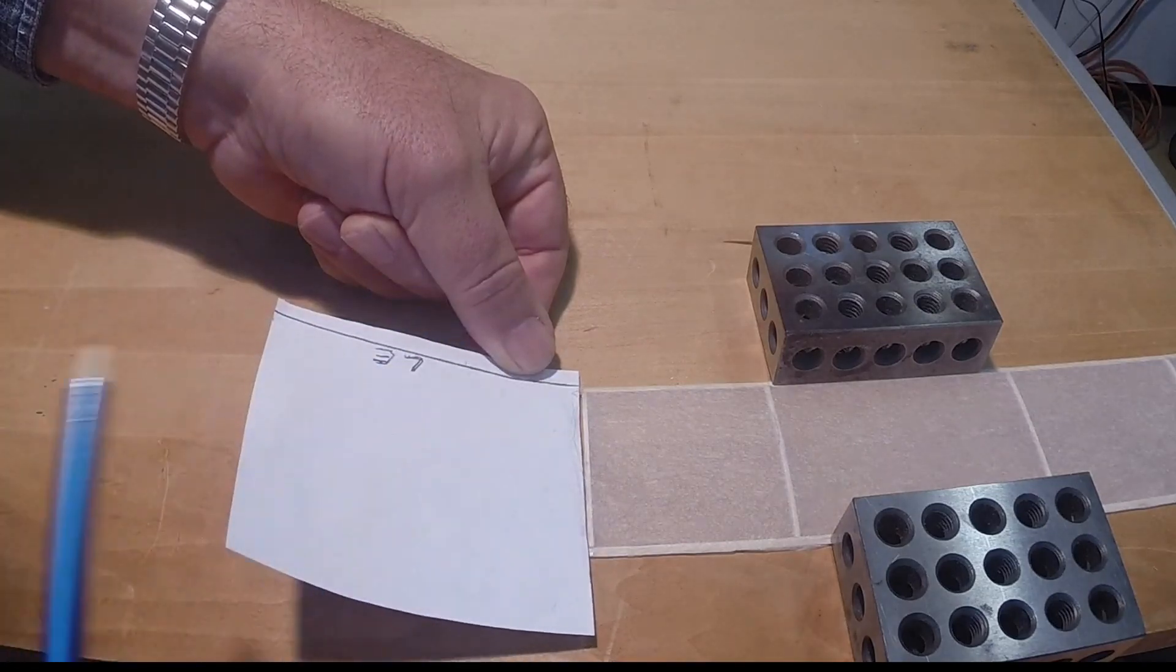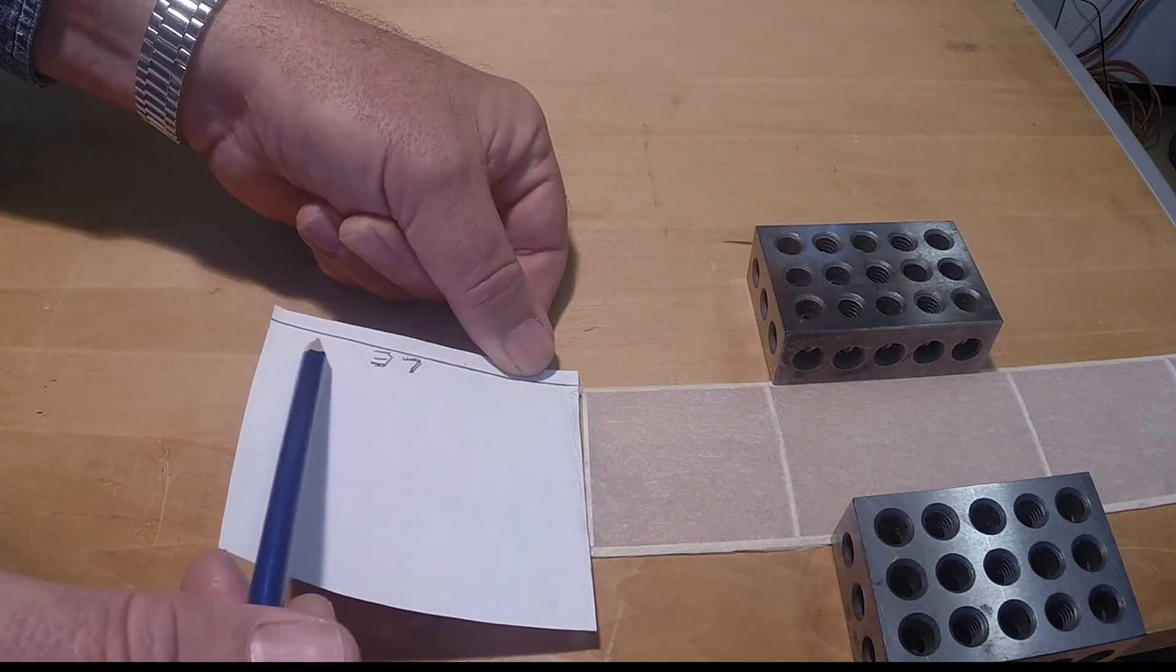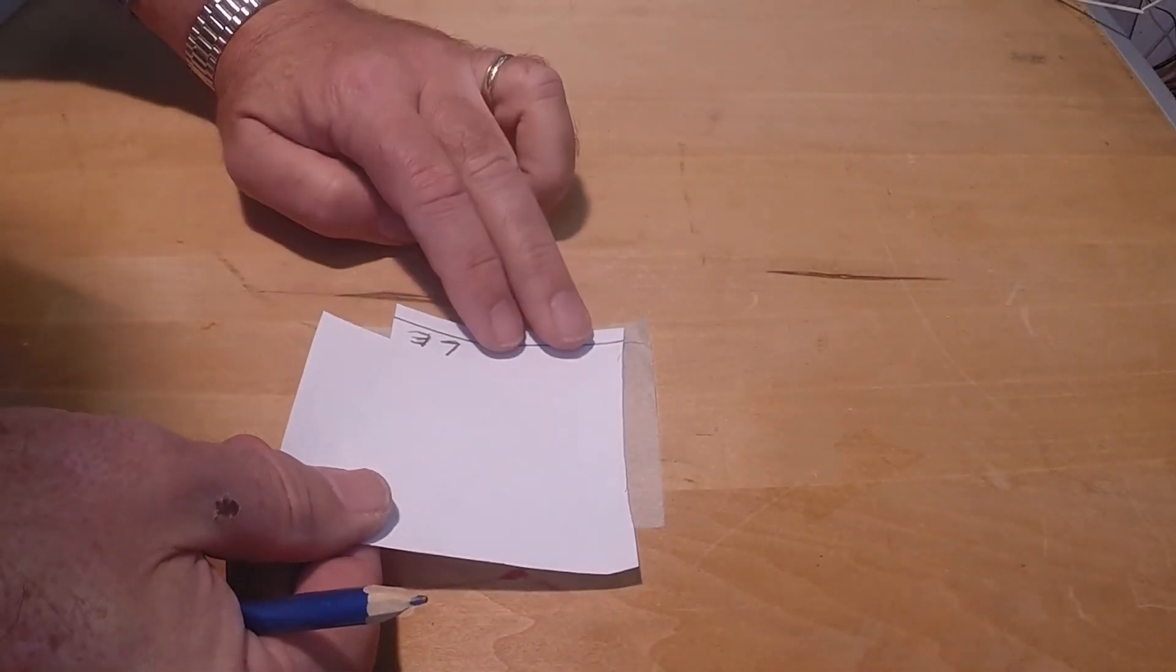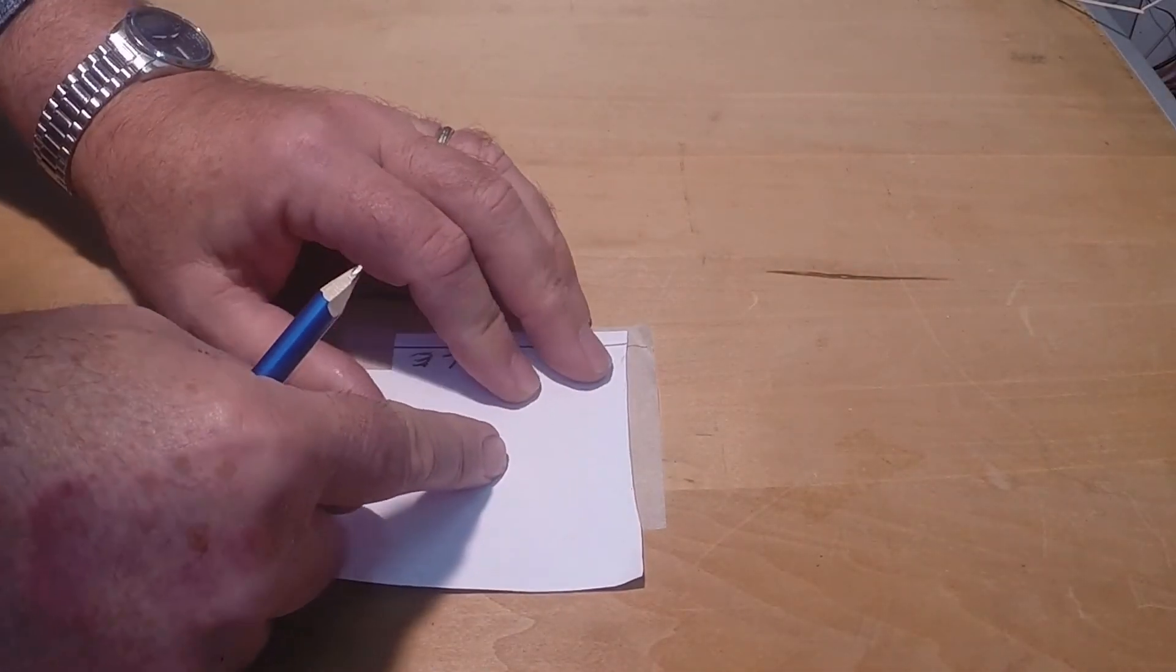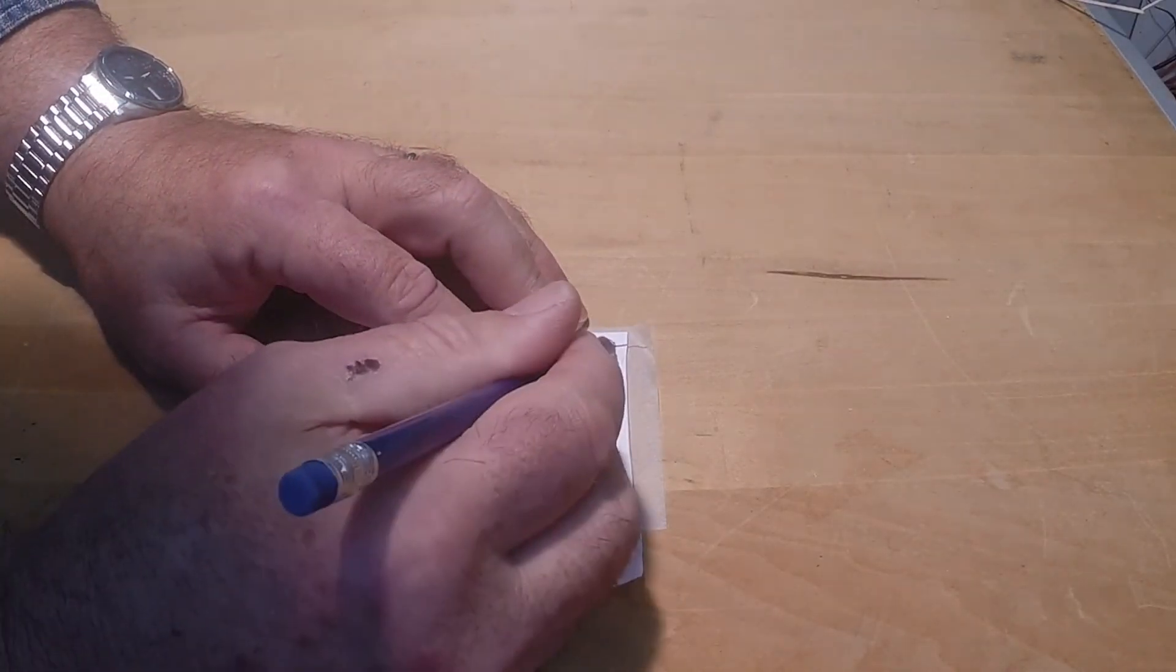Mark the paper to identify where the leading edge is located. Once you are satisfied with the fit, trace the curve outline onto the tissue and cut the arc.